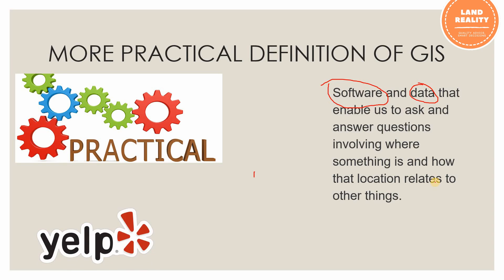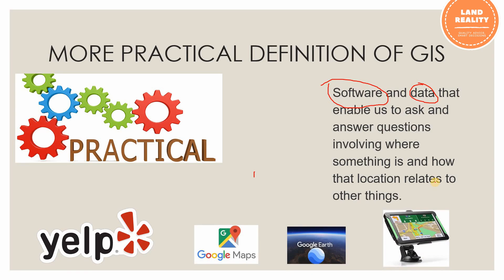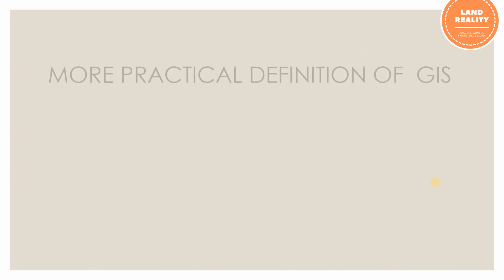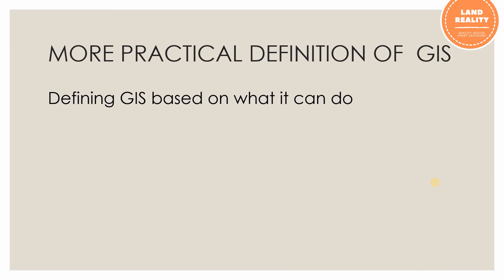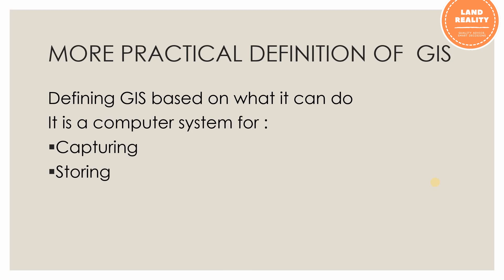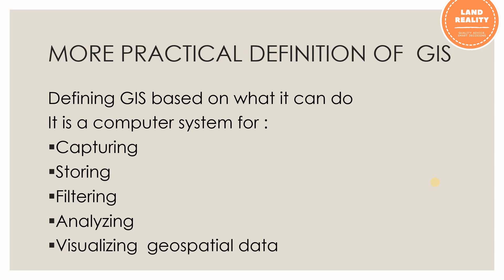Examples of GIS include Yelp, Google Maps, Google Earth, and navigation maps on a tablet. These are basically examples of GIS. Another practical definition of GIS is one based on what it can do — the actual work GIS can perform: it is a computer system for capturing, storing, filtering, analyzing, and visualizing geospatial data.